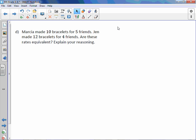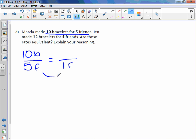Letter D. Marsha made 10 bracelets for 5 friends. Ben made 12 bracelets for 4 friends. Are these rates equivalent? Explain your reasoning. So we have 10 bracelets for 5 friends. Let's put 1 in our denominator. To get from 5 to 1, we divide by 5 and we do the same up top. 10 divided by 5 is 2 bracelets per friend.